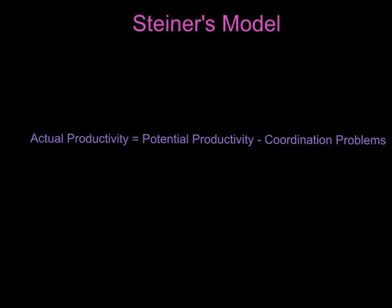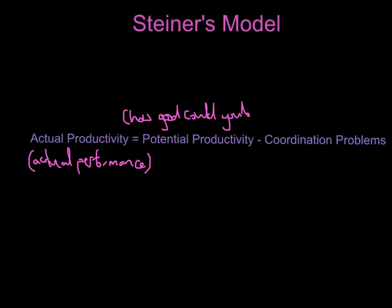Our penultimate topic in group dynamics is Steiner's model. Steiner wanted to put aspects of group dynamics into a basic equation: actual productivity equals potential productivity minus coordination losses. Actual productivity is basically your actual performance — the performance your team delivers this weekend or whenever you're competing. Potential productivity is how good you could be — if everyone was fit, everything went perfectly, and tactics and set pieces worked to perfection.